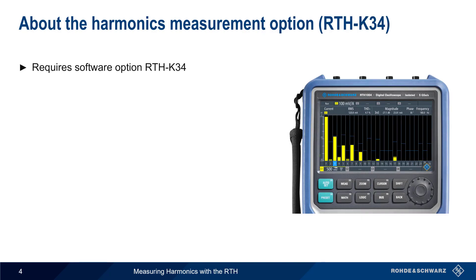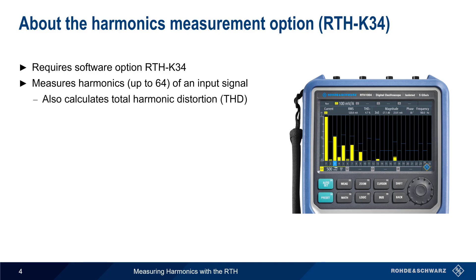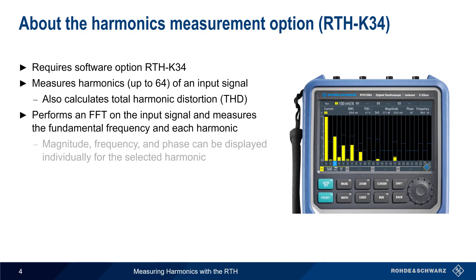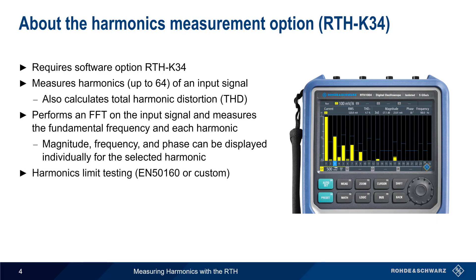Measuring harmonics with the RTH requires software option RTH-K34. This option enables measurements of the first 64 harmonics of the input signal, and also calculates the total harmonic distortion. The RTH does this by performing an FFT, or Fast Fourier Transform, on the input signal, and then measuring the fundamental frequency component and each harmonic. The magnitude, frequency, and phase of each harmonic can be displayed individually. This option also supports harmonic limit testing, either using the standard EN5160 values or a user-defined set of limits.